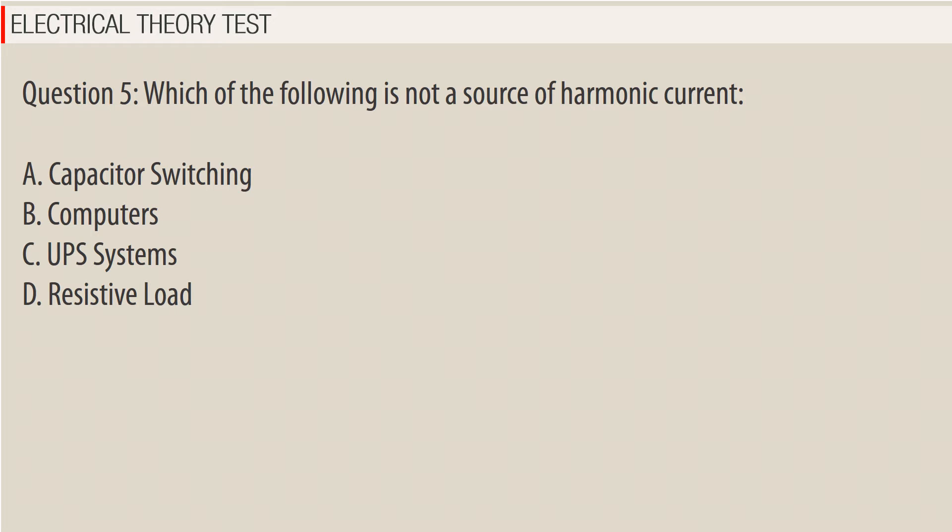Question 5: Which of the following is not a source of harmonic current? A. Capacitor switching. B. Computers. C. UPS systems. D. Resistive load.